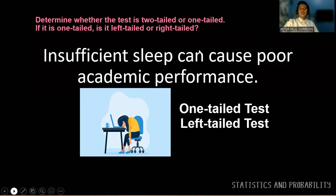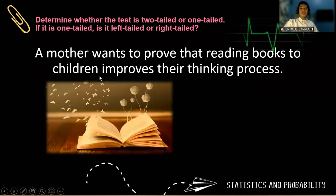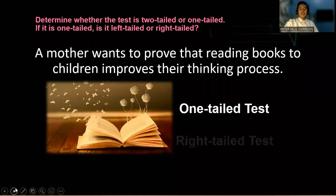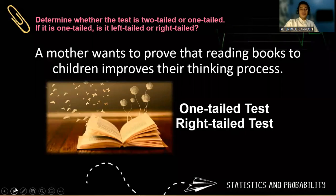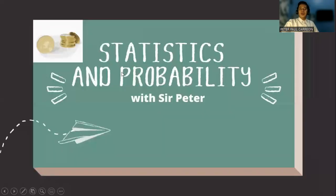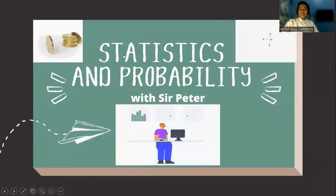And a mother wants to prove that reading books to children improves their thinking process. So the word improve means a positive change, right? So that is a one-tailed right test. So I hope that these examples are already good enough for you to answer the activity on your modified assessment.